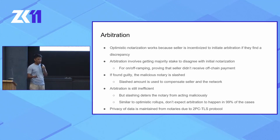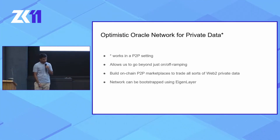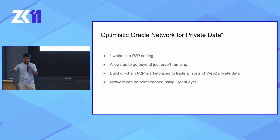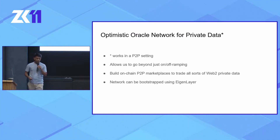Finally, the privacy of data is maintained from the notaries due to the 2PC TLS protocol. The optimistic notarization flow can be generalized to an optimistic oracle network for private data. It works in a P2P setting where the other party constantly checks whether the optimistic notarization happened correctly, and this allows us as a team to go beyond on-off ramping — to build on-chain P2P marketplaces to trade all sorts of web2 private data.